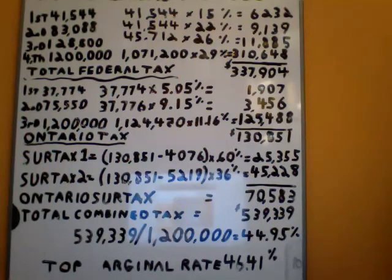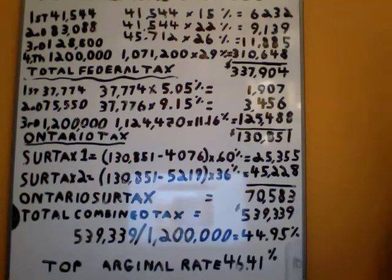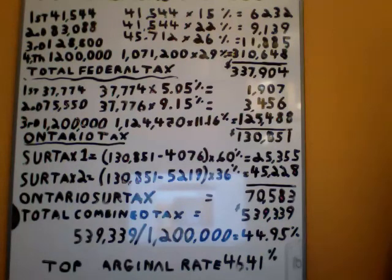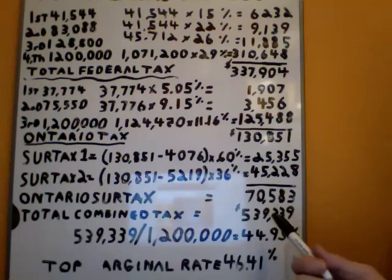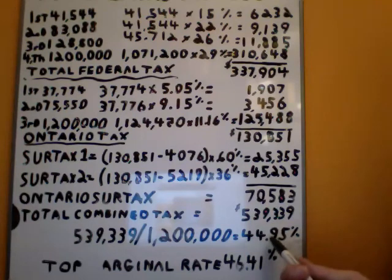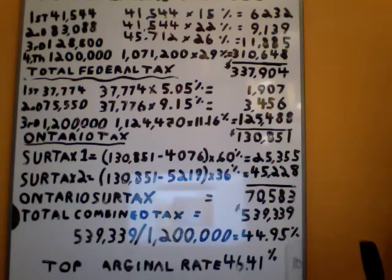This is how we calculate the actual taxes payable for an individual. One thing I haven't considered in this example — I've left it out because I don't have enough board space — is the deduction for non-refundable tax credits that this individual would have. Everyone has a basic exemption federally and a basic exemption provincially. For this individual located in Ontario, that figure would work out to roughly $2,300. So if you wanted to consider his basic exemption, I would deduct another $2,300 from the $539,399 to get his actual taxes paid with the one non-refundable tax credit that everyone gets.